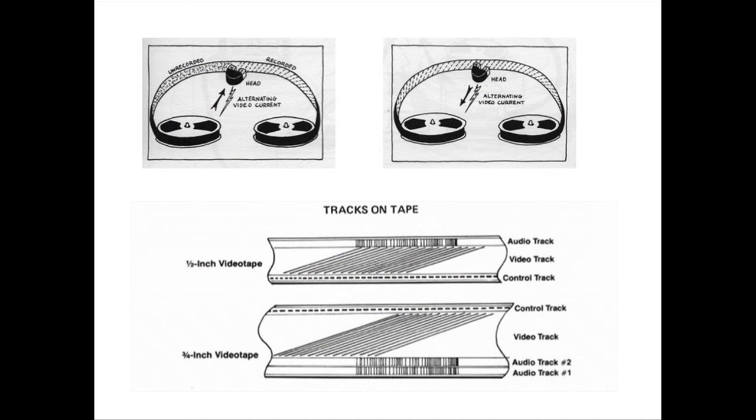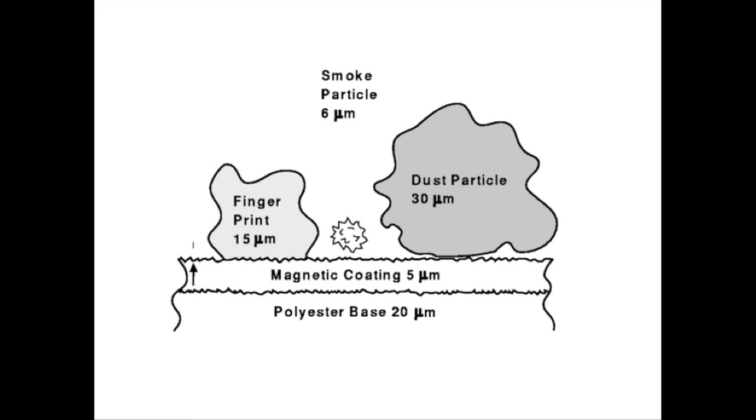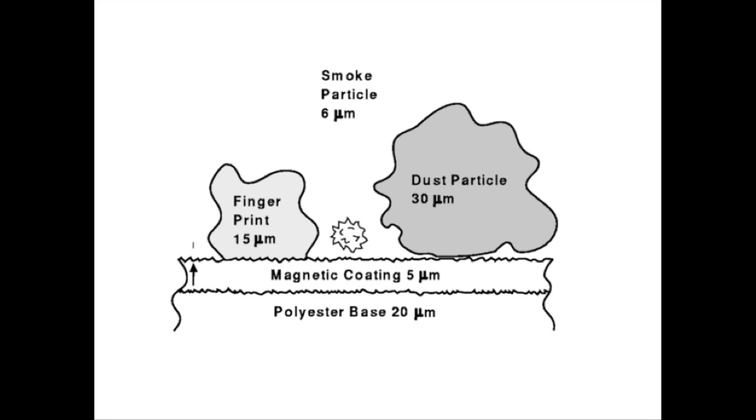This is how tracks are laid down on the tape. Video tracks are laid down diagonally, with an audio track laid straight on top and a control track that keeps everything together. Because the magnetic particles are so small, any dust particle or fingerprint is going to cause a disturbance between the tape and the heads reading it. That's what causes the lines of dropout you see on a VHS film — those staticky lines can be caused by just a dust particle or a fingerprint.